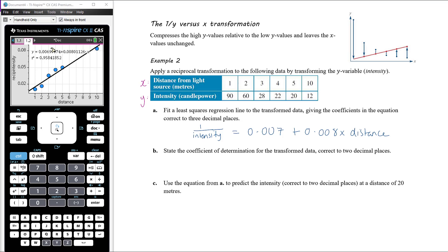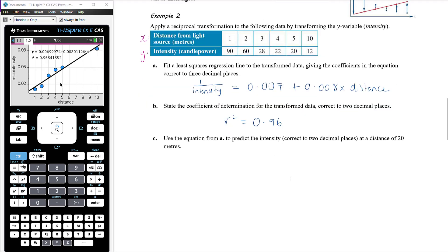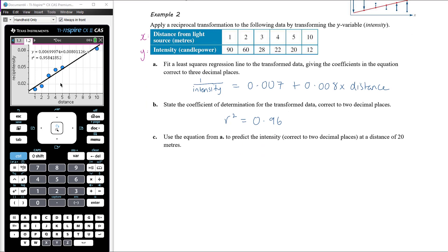State the coefficient of determination for the transformed data correct to two decimal places. We've got that on screen here: r squared equals 0.96. Remember, if you're not seeing r squared, menu 6 for settings and make sure the diagnostics box is ticked. You should only need to do that once, and then you'll always see r squared.